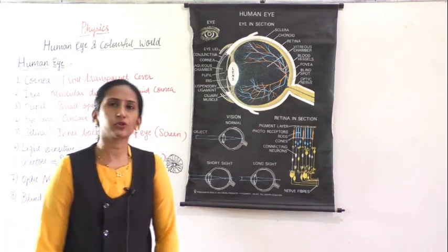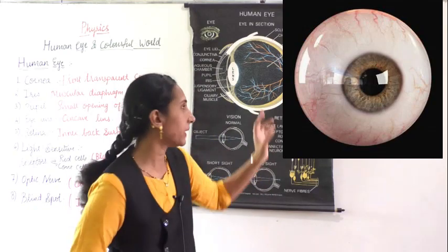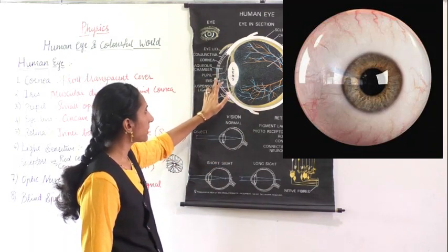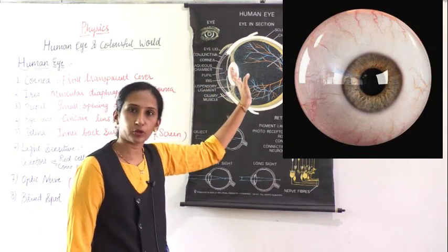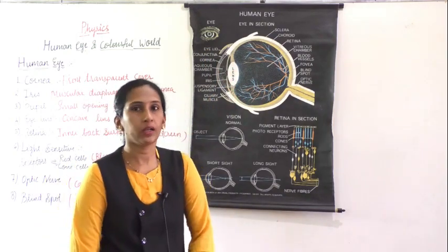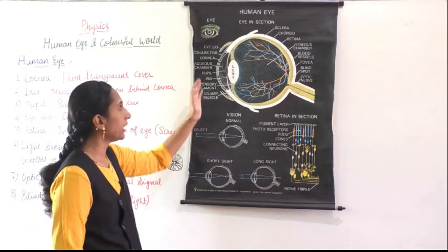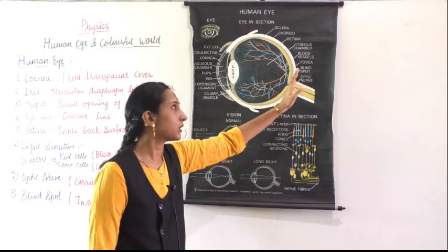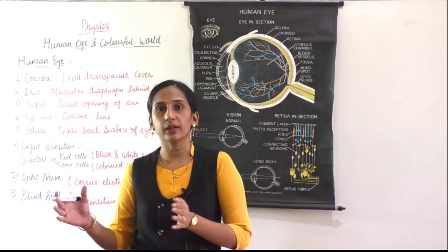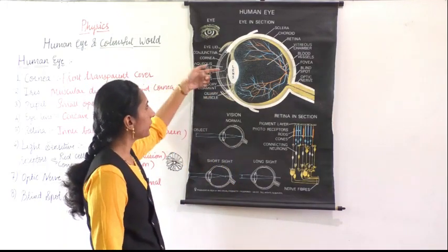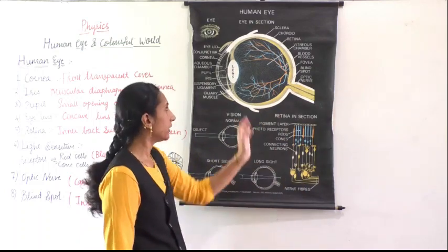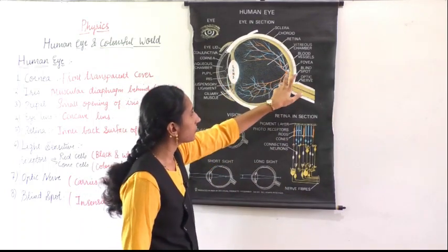The eyeball is whitish in color on the outside. So far we have studied the cornea, the iris, and the pupil. Now we will study the lens. Light falls on the lens and travels back to the screen — similar to placing a lens between a light source and a screen. In the eye, that screen is called the retina.